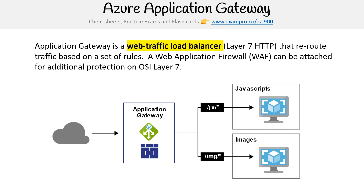So let's say you had a server that served up all your JavaScript assets and a server that served up all your images. You could make a rule saying when the path matches this, only send it to this server, and when the path matches that, only send it to that server. And that's Azure Application Gateway.